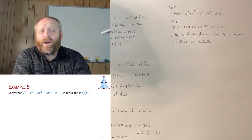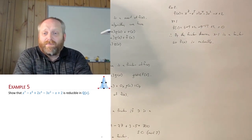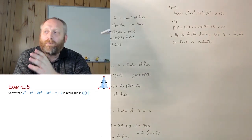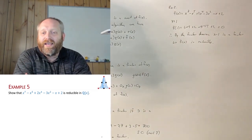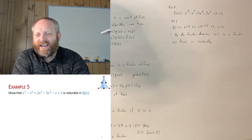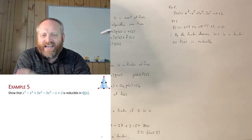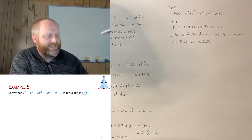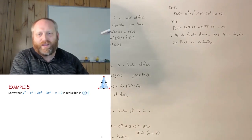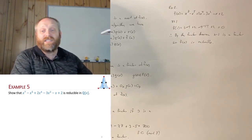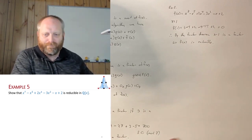If ±1 didn't work we could try other values, but there may be a better method — we'll likely cover that in the next class. For now, the strategy is: try the easy values first; if we find a root, great; if not, move on.